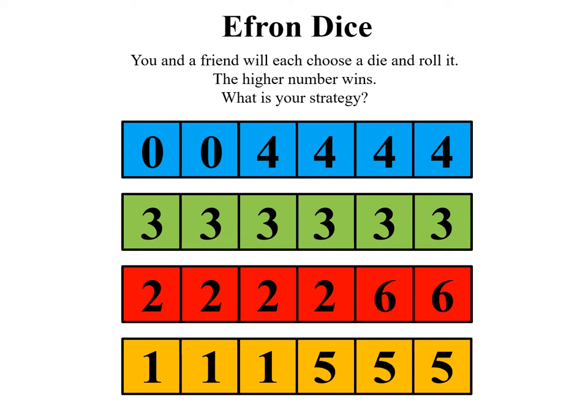Here's a blue die. It really should be a cube, but the way we're going to illustrate it here on this PowerPoint, there are the six sides. It's a weird die because two of the sides have a zero on them and then four of the sides have fours.